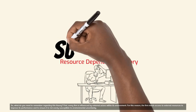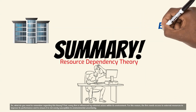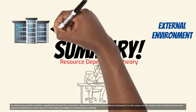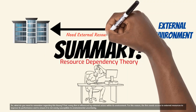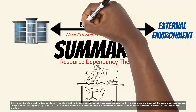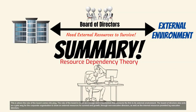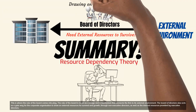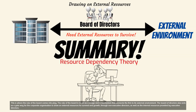What do you need to remember regarding this theory? First, every firm is influenced by external actors within its environment. For this reason, the firm needs access to external resources to improve its performance and to ensure it is not overly susceptible to environmental uncertainty. This is where the role of the board comes into play — the board acts as a bridge and a mechanism that connects the firm to its external environment. The board of directors also acts as a gateway for the corporate organization to draw on external resources for survival and growth, through non-executive directors, as well as the internal resources provided by executive directors.